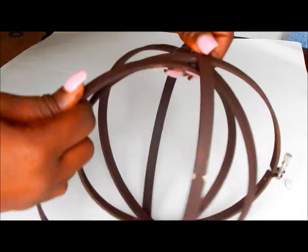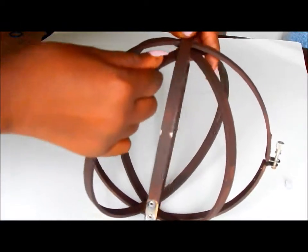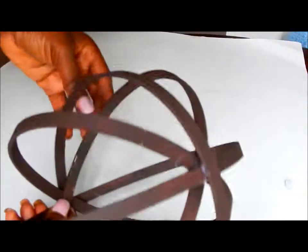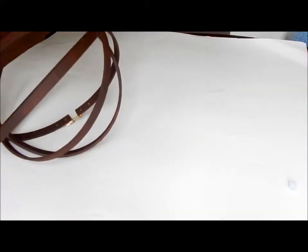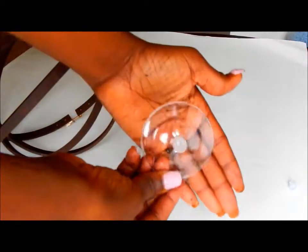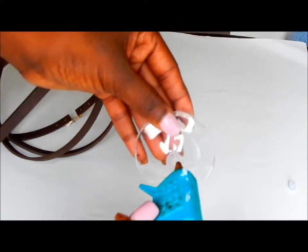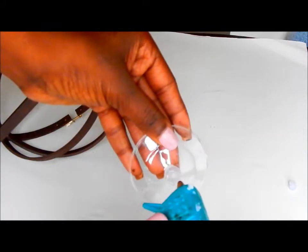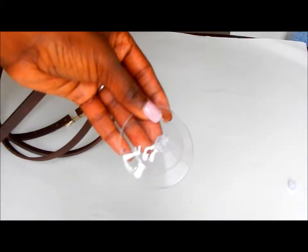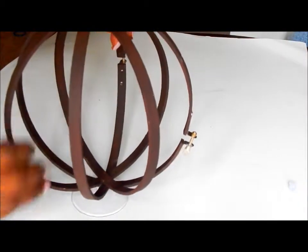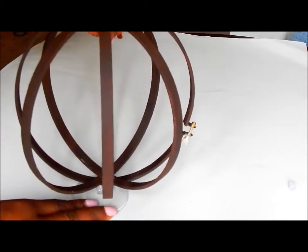You will do the same with the very last one as well. And next, you will take that bottom piece of that wine glass and you will apply hot glue to the stem of it, and then you will place it in the middle of one end of the sphere and hold it there for a few seconds.